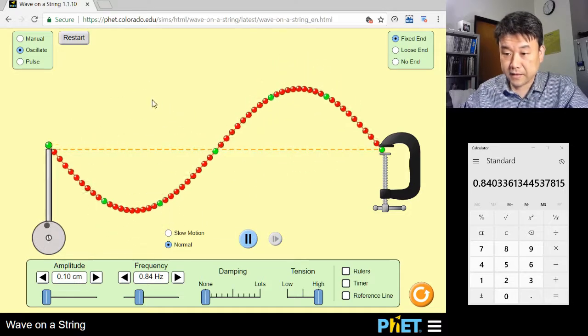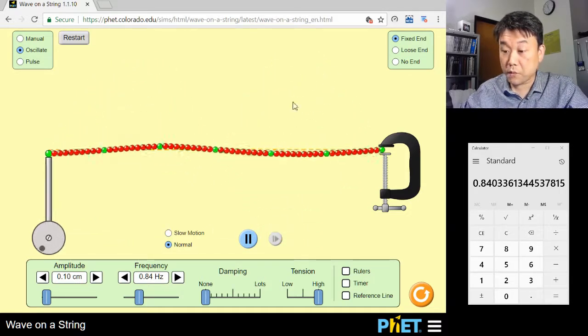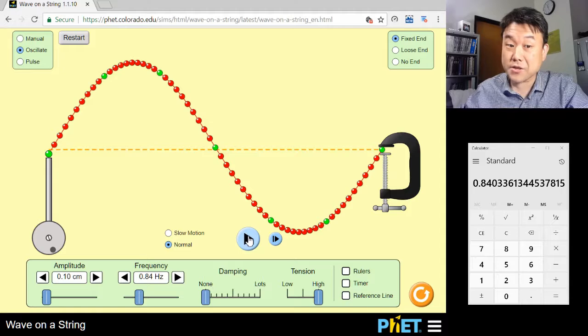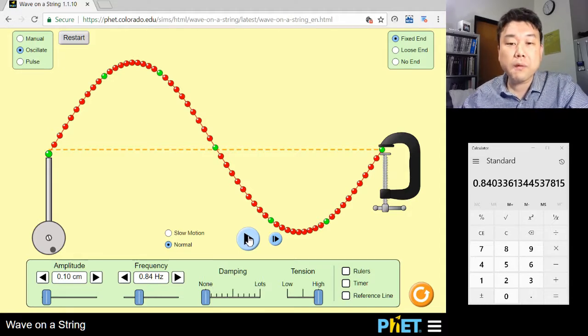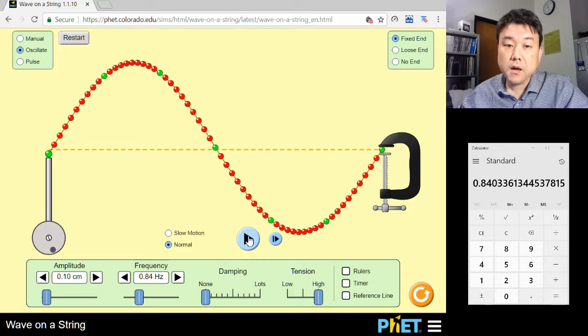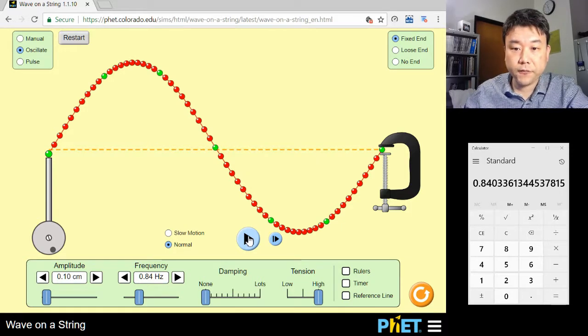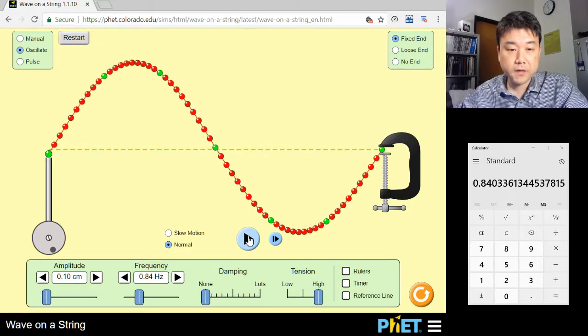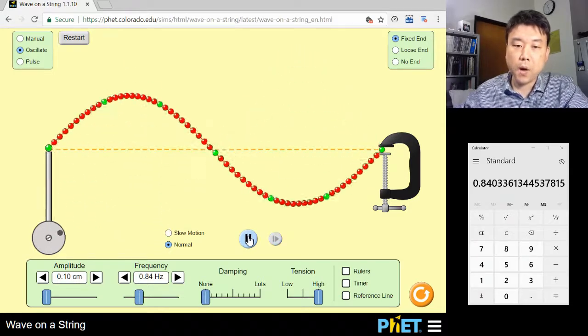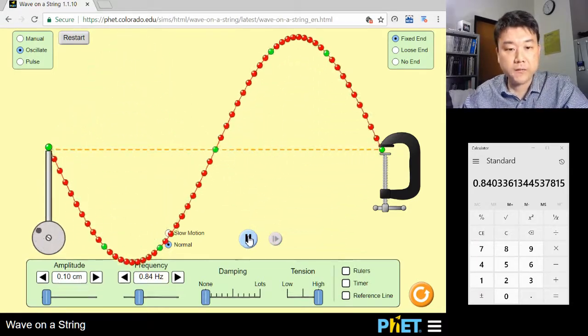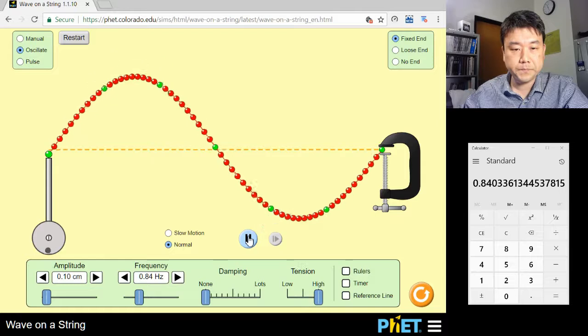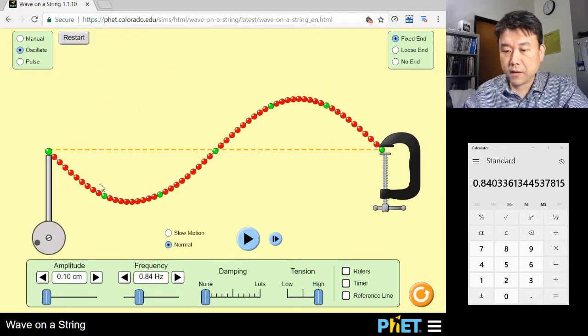And these spots, which move the most but whose location is not changing, are what we call anti-nodes, sort of opposite of nodes. Once you recognize these features of a standing wave, you can kind of see why we couldn't get a standing wave at the previous frequency. For this standing wave, we need nodes at both ends.